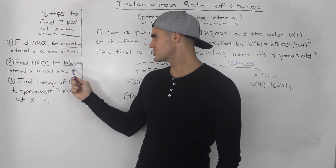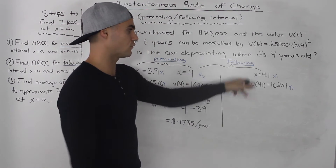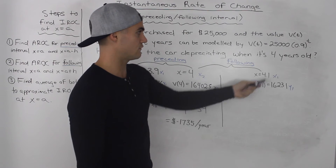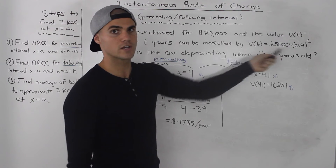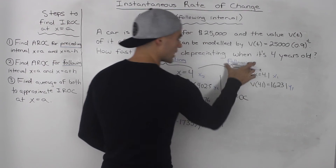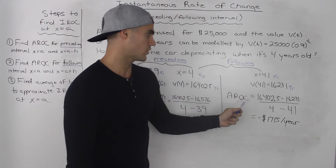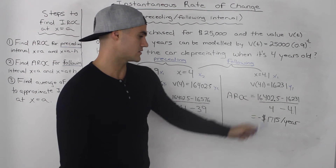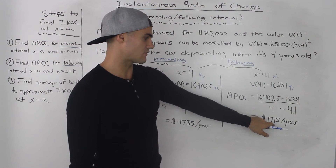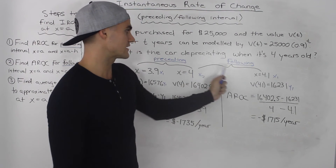Now we move on to Step 2: find the average rate of change for the following interval. The following interval would be between 4 and a point very close to it and greater than it — so 4.1. We plug 4.1 into the equation to find the car's value at 4.1 years. Then we compute y2 minus y1 over x2 minus x1 and get an average rate of change for this following interval of negative $1,715 per year — that's the rate at which the car is depreciating between 4 and 4.1 years.